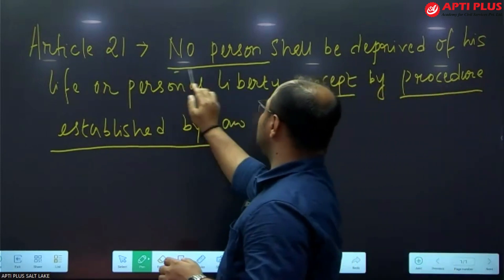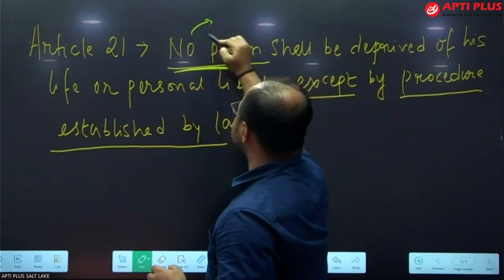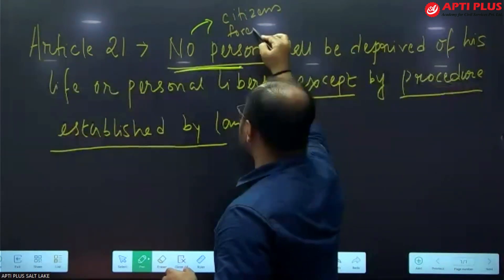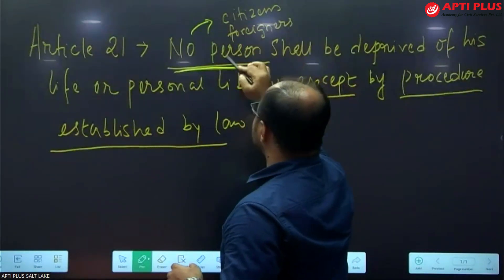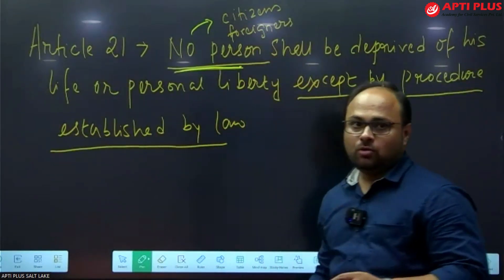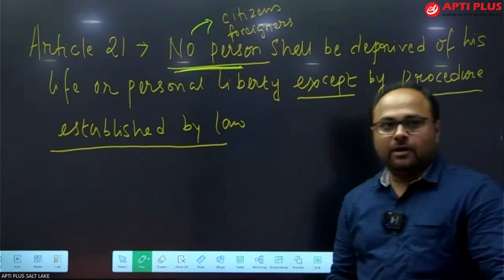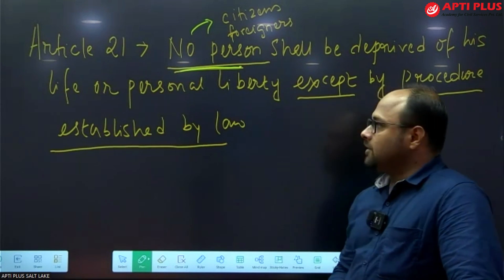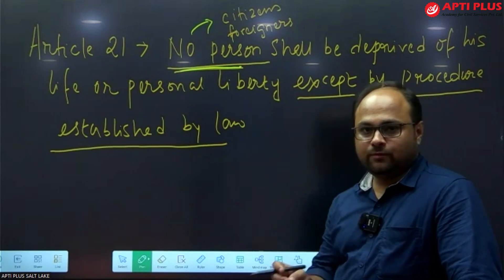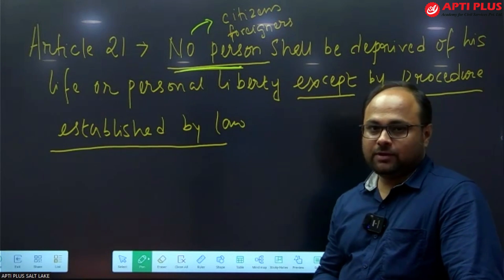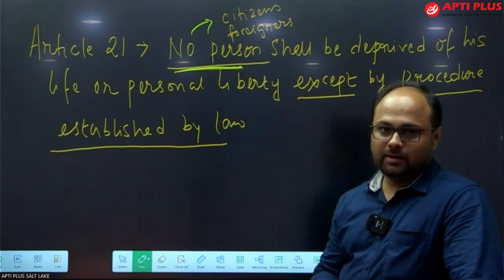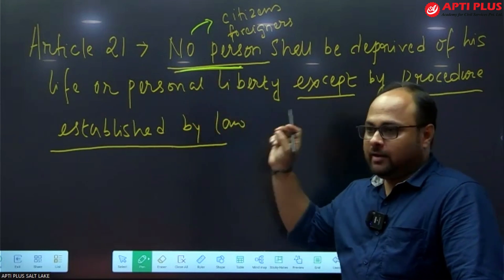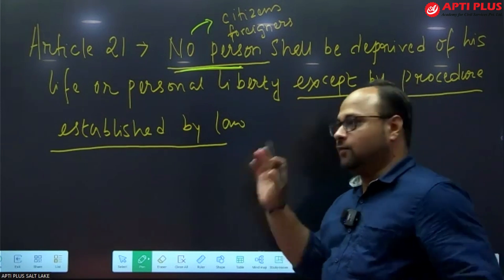The phrase 'no person' indicates both citizens as well as foreigners. Most fundamental rights are available for both citizens and foreigners, but there are five specific fundamental rights available only for citizens: Articles 15, 16, 19, 29, and 30. Article 21 uses 'no person,' which means it is available for citizens as well as foreigners.